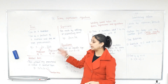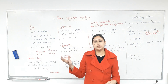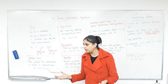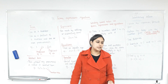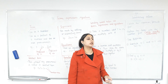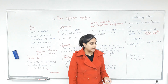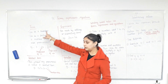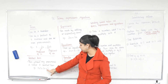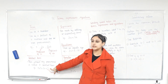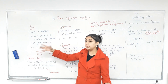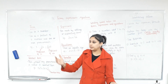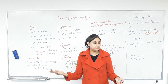So basically in algebra you'll get a number of terms. Have you heard of the word terms before? So what is a term? A term is a combination of letters and numbers. It can just be a number — for example, 7, that's a term. Or it can just be a letter: X, Y, A, B — that's a term.